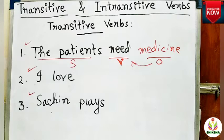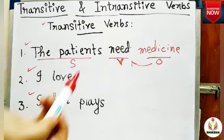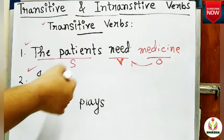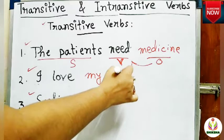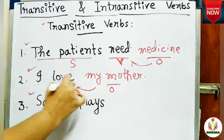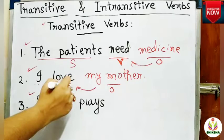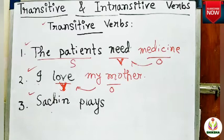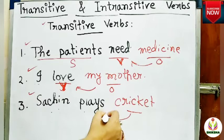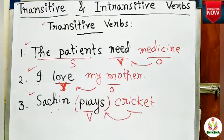Verbs that need an object to complete their meaning are called transitive verbs. In the sentence 'I love,' a natural question arises: I love whom? The meaning is incomplete. Adding 'my mother' gives us the object. Similarly, 'Sachin plays cricket' — cricket helps the verb play complete its meaning. That's why this verb is transitive. A transitive verb needs an object to complete its meaning.